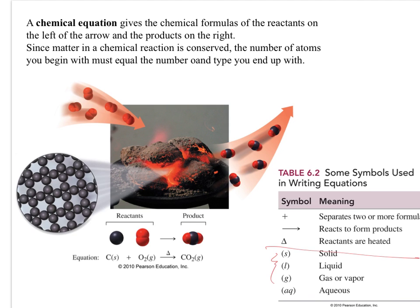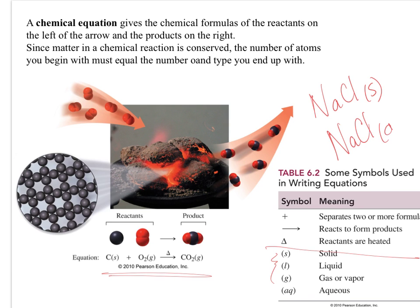These little abbreviations make a lot of sense: S for solid, L for liquid, G for gas or vapor, and AQ which means aqueous — dissolved in water. For instance, NaCl with an S means it's a solid, like the salt sitting on your kitchen table. NaCl with AQ means it's been dissolved in water — that's salt water, sodium chloride dissolved in water. That's what we call aqueous, and that gives you an example of the difference between the two.